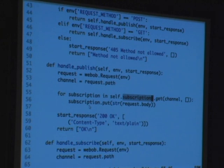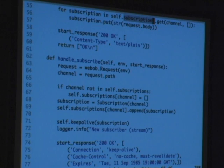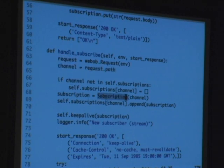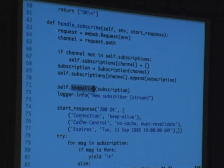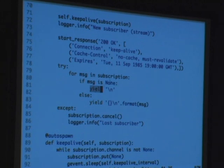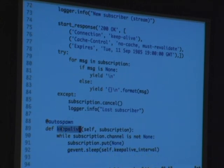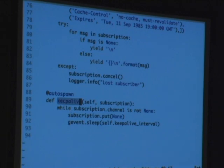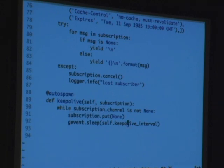Publish is pretty simple: use WebOb to parse the request, the channel is the path, look in our subscriptions dictionary to get subscriptions, iterate over them and put into them, then return OK. These are all kind of toy examples — they work pretty well but there are plenty of edge cases. When you do a GET, it calls handle_subscribe, parses a WebOb request, creates a subscription, puts it in the dictionary, calls a keep_alive function, starts a 200 response, and then starts yielding. We iterate over that subscription queue and yield each item as a string with a newline. The newline is a keep-alive — like the Twitter streaming API.